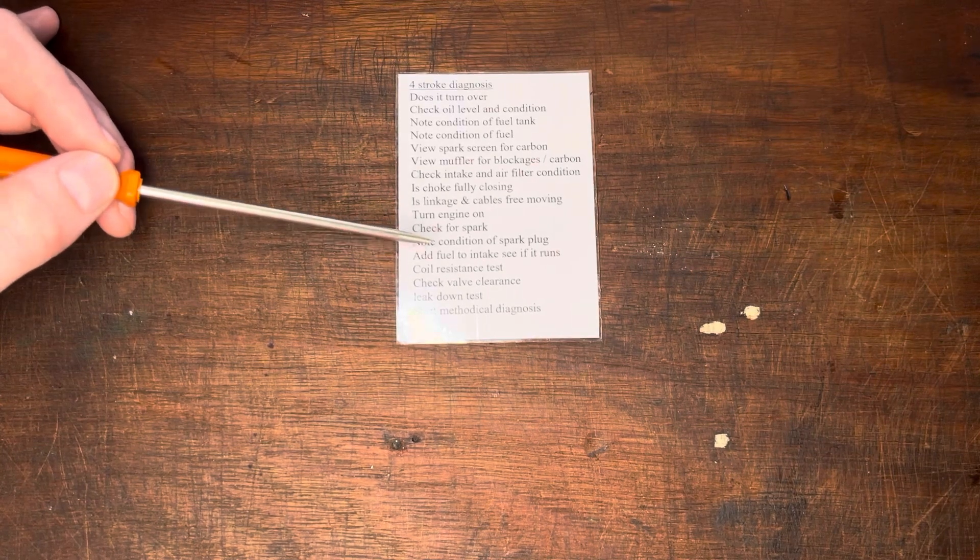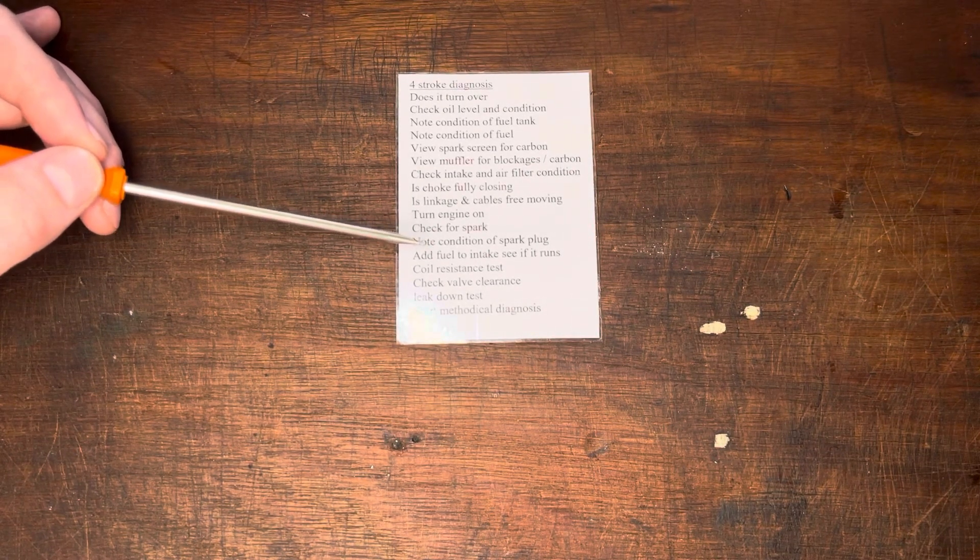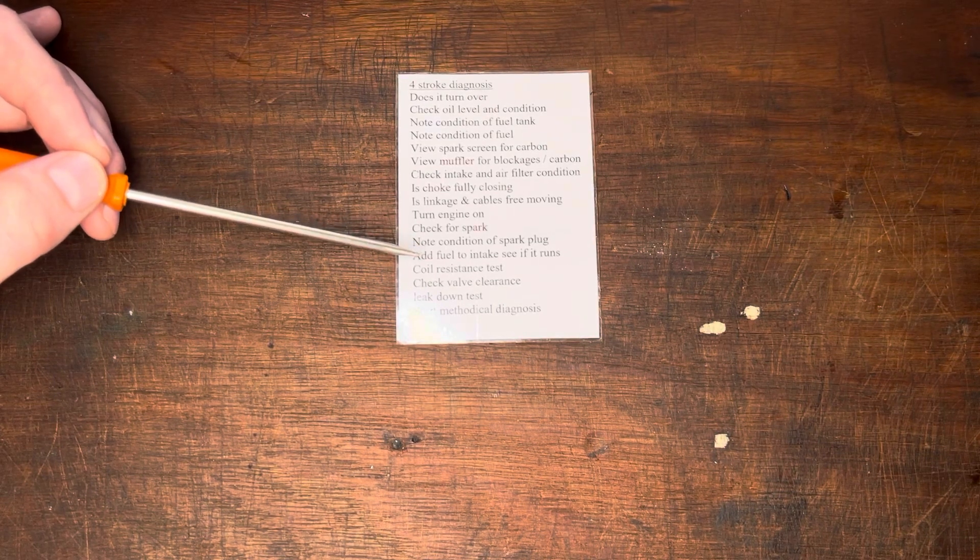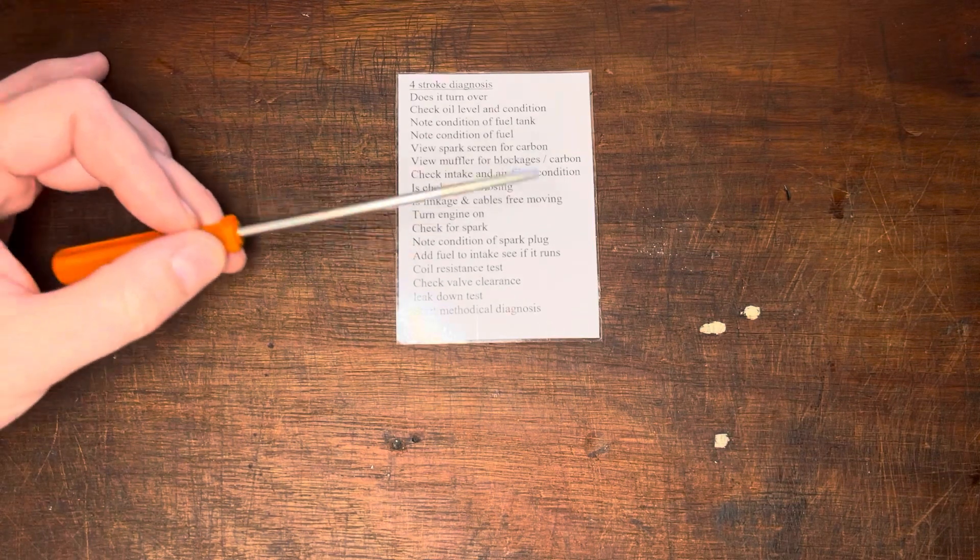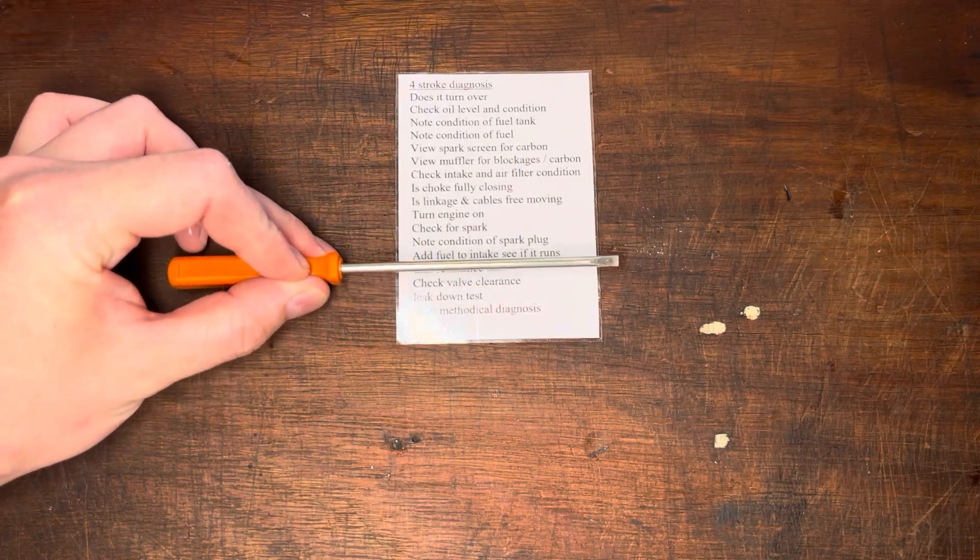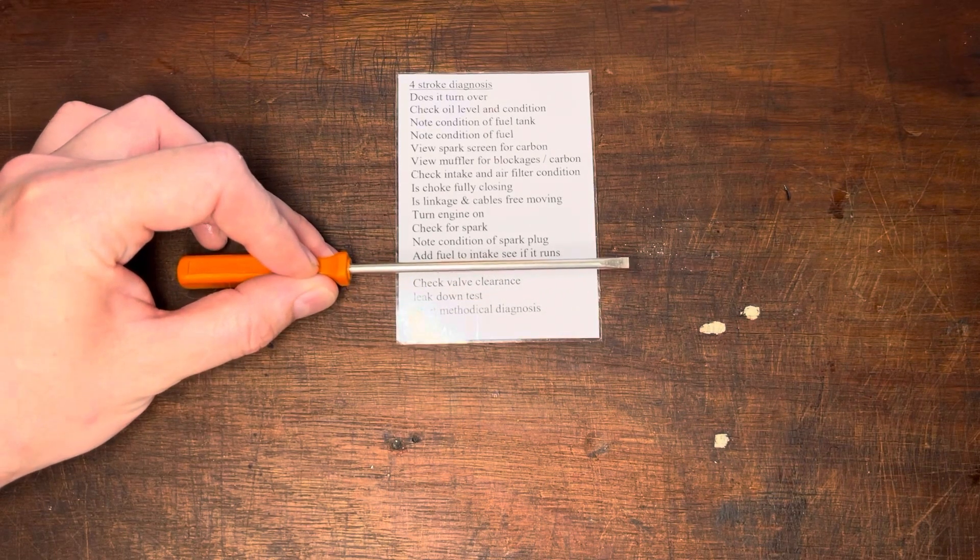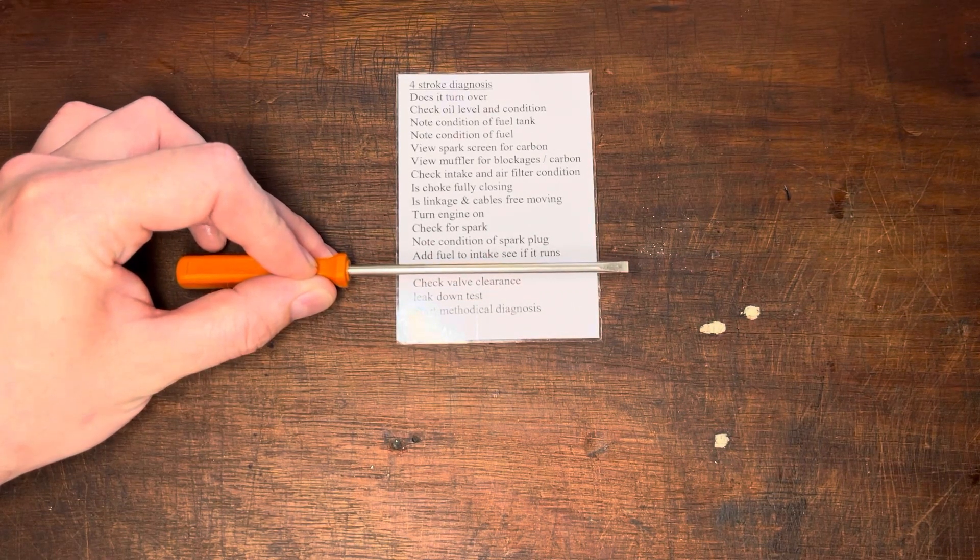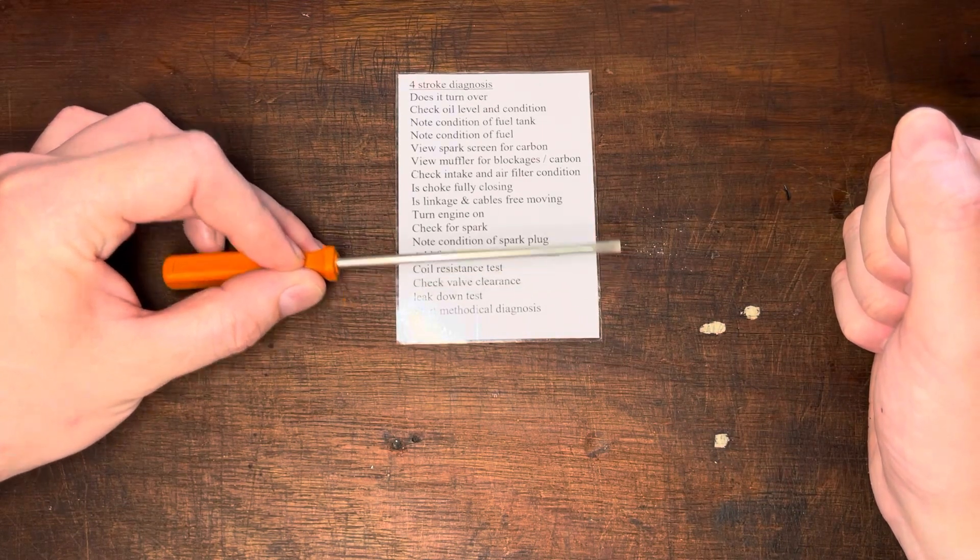And then add fuel to the intake to see if it runs. Not so important with a four-stroke. You can add it straight into the spark plug hole if you so wished. The engine's lubricated via the bottom. And then, again, that's kind of like where you start to have more specialist pieces of equipment that you do need for four-stroke diagnosing to do it efficiently. So those things, very simple, very quick, and easy to do.